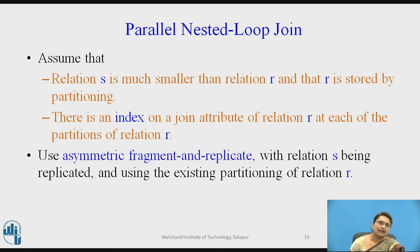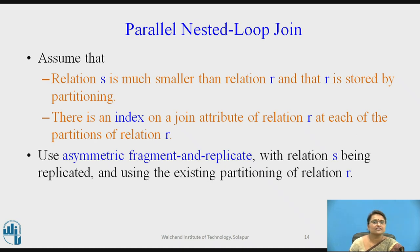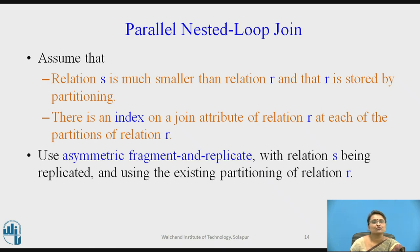The second technique is the parallel nested loop join, which works like a normal nested loop join where every tuple of one relation is compared with every tuple of the other relation. Additionally, it uses partitioning as well as indexing. Relation s is smaller than relation r. We partition relation r, build an index on r, replicate relation s, and then use the index on r to do the probing and comparison for the join operation. This is called the asymmetric fragment and replicate join, with relation s being replicated and using the existing partitioning of relation r.